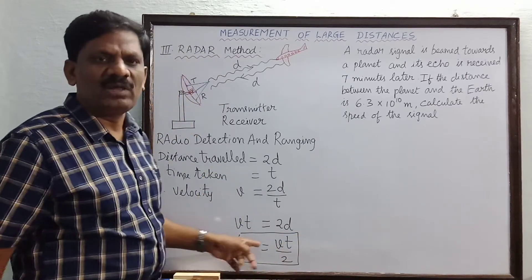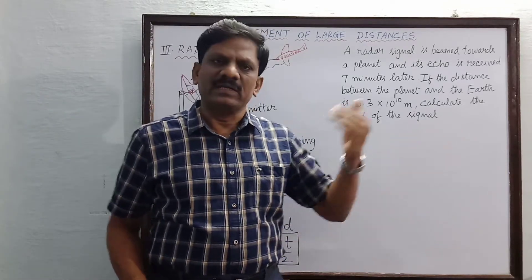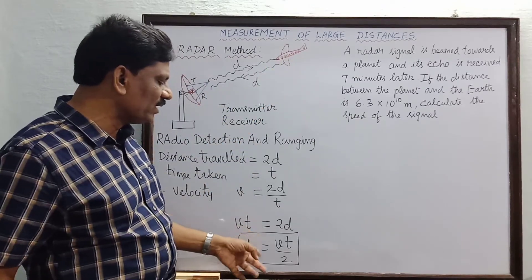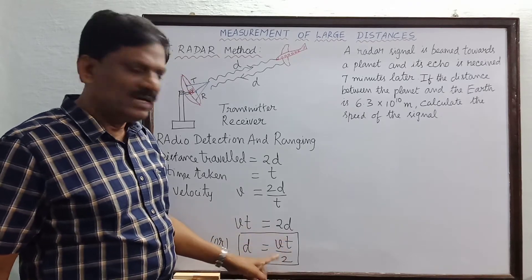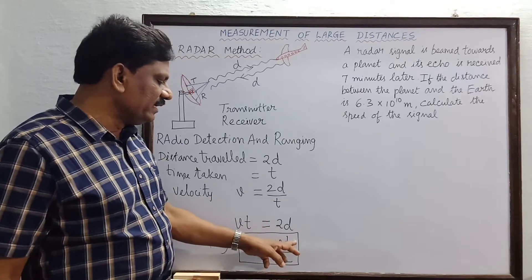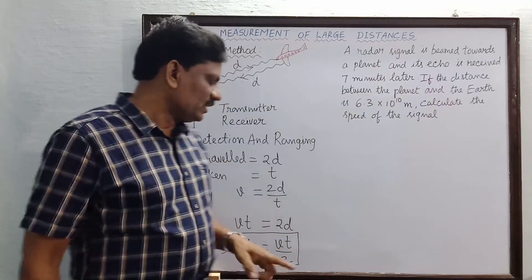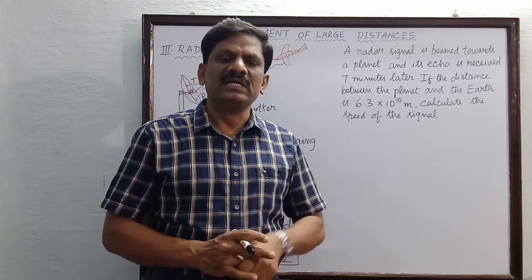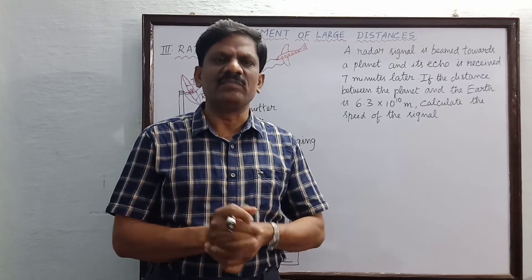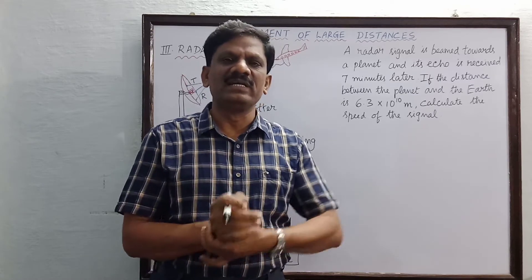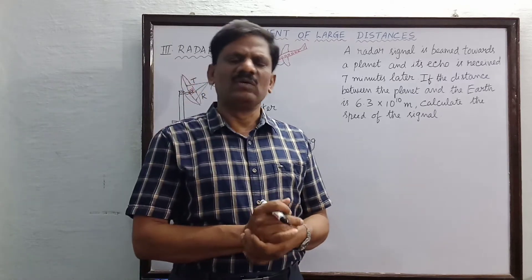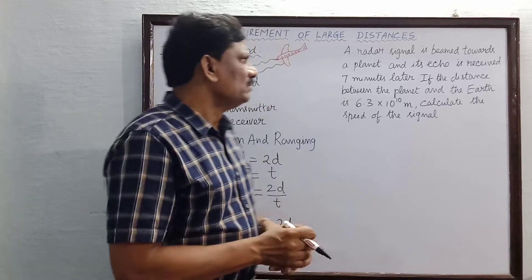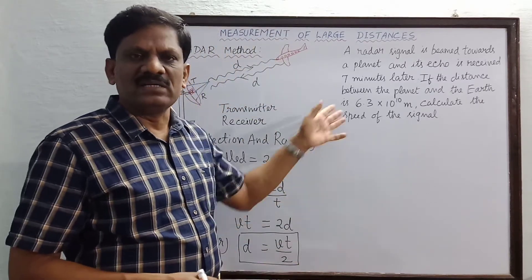Using the formula d = vt/2, we can find the distance of an aeroplane with respect to the radar, where v is the velocity of the radio waves and t is the time taken by the radio pulse to go and come back. This type of radar is used in air traffic control management at airports. The radar was invented during the Second World War, when it was used to find the position of enemy or friendly aircraft.